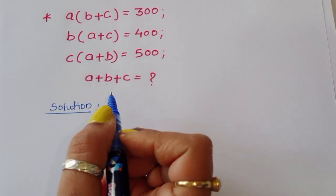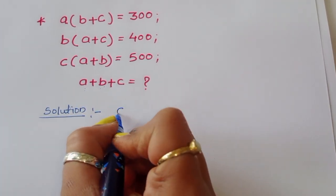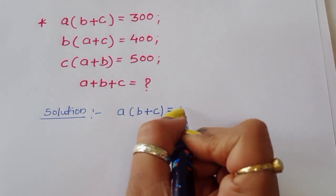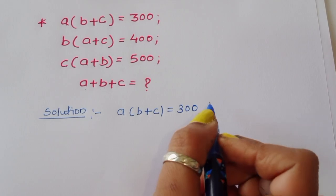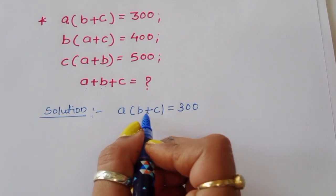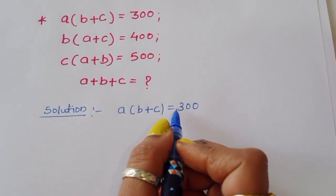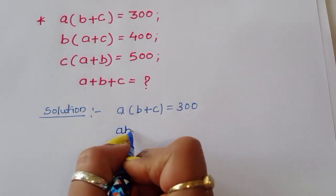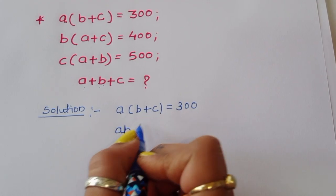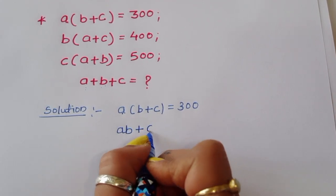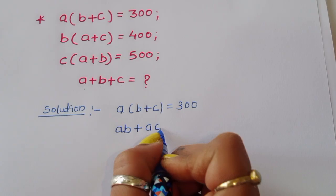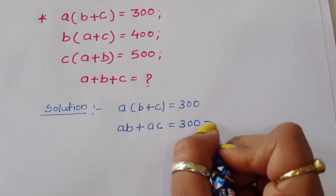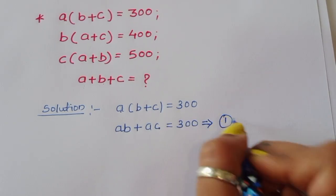Solution. First, A times (B plus C) is equal to 300. We can expand this term: AB plus AC is equal to 300. We are giving this equation number 1.